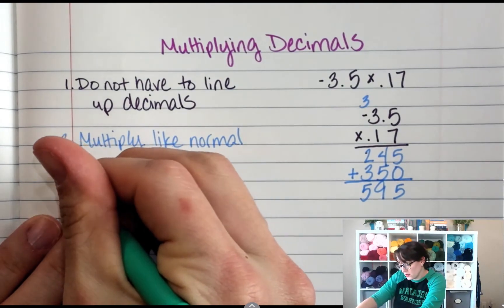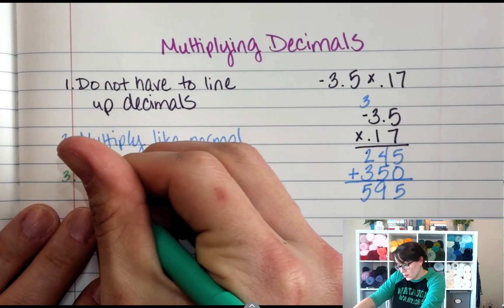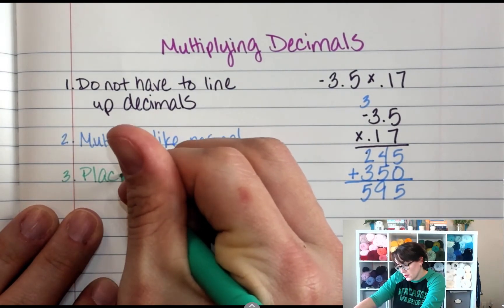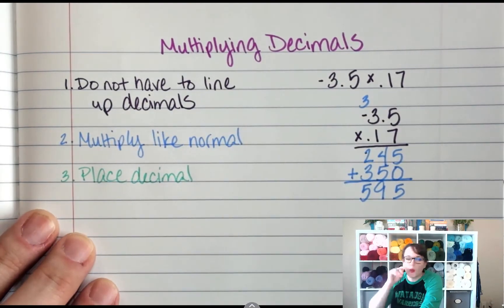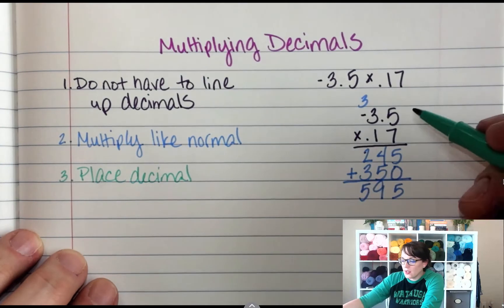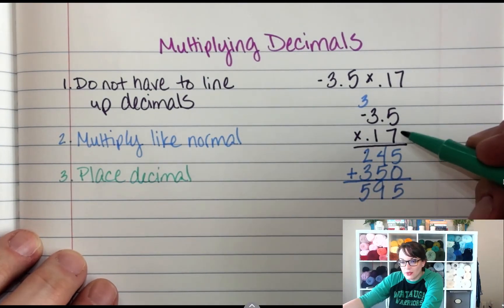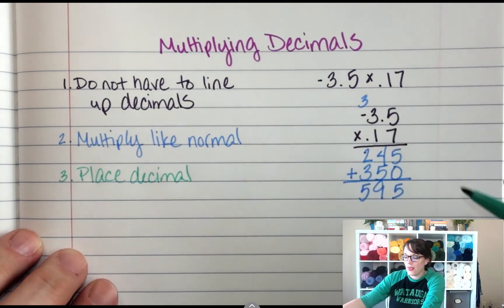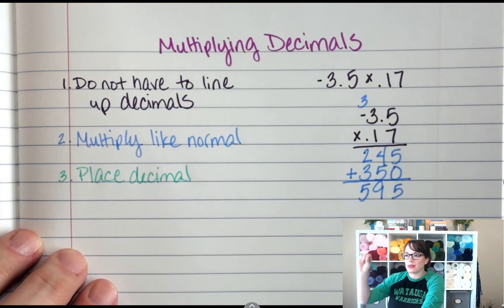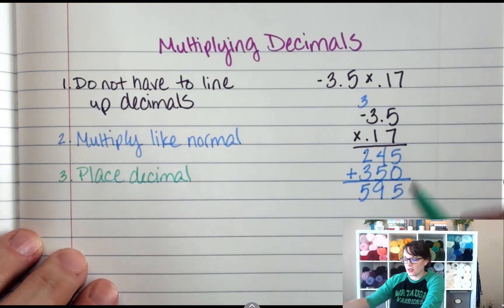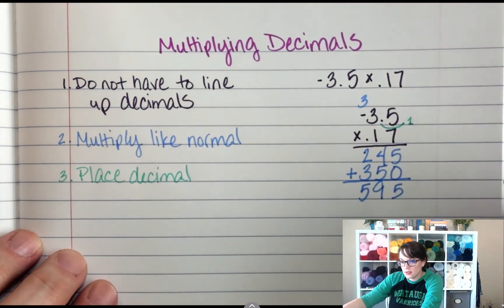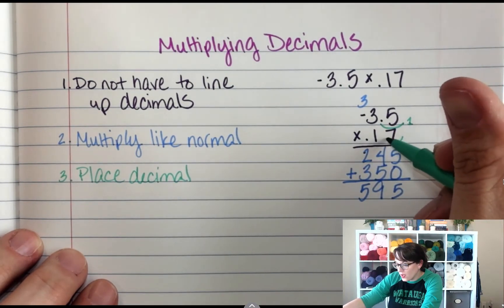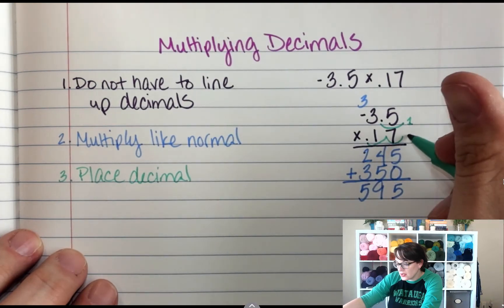So the next thing I'm going to do is I'm going to figure out where to put my decimal. So step three, place decimal. And the way I put my decimal here is I count how many numbers are behind the decimal in the problem, and I put that many numbers behind the decimal in the answer. So here I have 1 decimal place, and here I have 1, 2 decimal places.